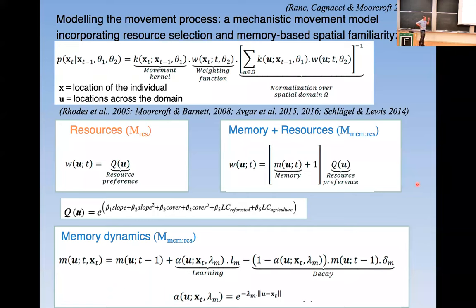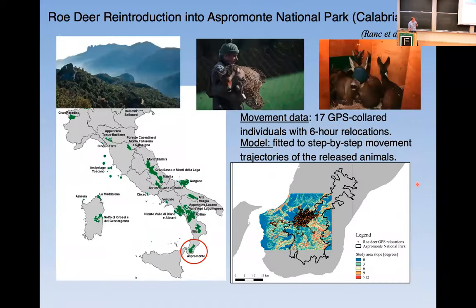So what we've done is to develop models which incorporate a lot of these ideas of essentially modeling resources and then incorporating the effects of memory. And so this is a simple model that I've worked on with Nathan Ranc and Francesca Cagnacci, in which you are modeling responses to resources, but we're incorporating the effects of memory through some simple memory dynamics. And then we're fitting these models directly to the kinds of data which come from GPS telemetry studies in which you have individual level movements.